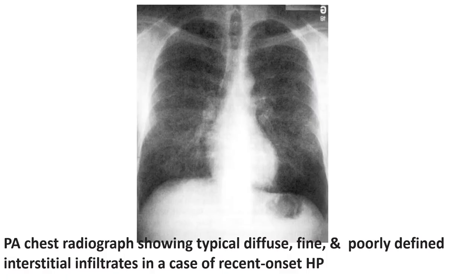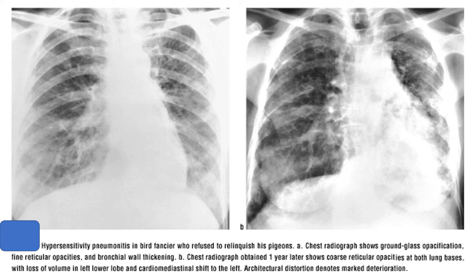This chest X-ray shows typical diffuse fine and poorly defined interstitial infiltrates in a case of recent-onset HP. The chest on your left shows hypersensitivity pneumonitis with ground-glass opacification, fine reticular opacities, and bronchial wall thickening. Chest B on your right, obtained after one year, shows coarse reticular opacities at both lung bases with loss of volume in the left lower lobe, cardiomediastinal shift to the left, and architectural distortion denoting marked deterioration.